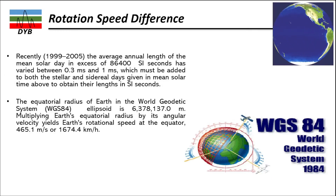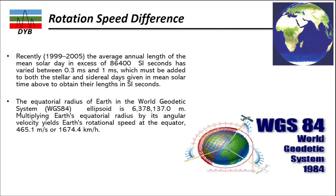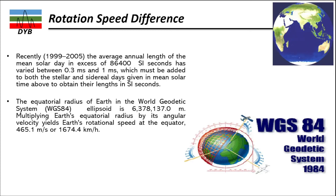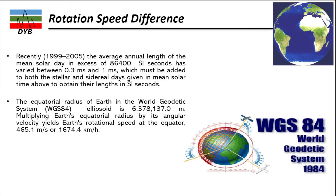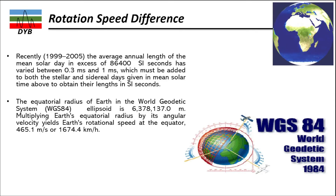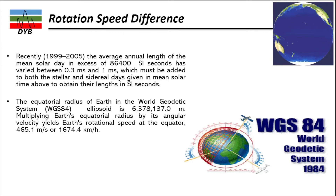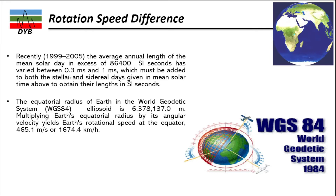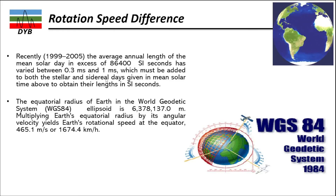Now let's look at rotation speed differences. From 1999 to 2005, the average annual length of the mean solar day, in excess of 86,400 SI seconds, varied between 0.3 milliseconds and 1 millisecond. This small variation must be added to both the stellar day and the solar day. While negligible, it is still important to account for — 0.3 milliseconds applies to the stellar day and up to 1 millisecond to the sidereal day.